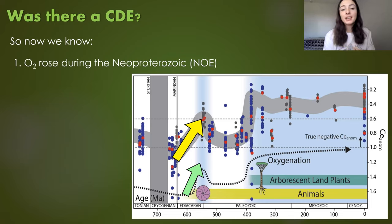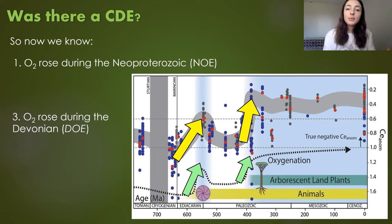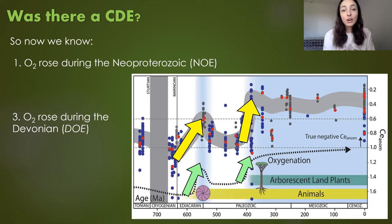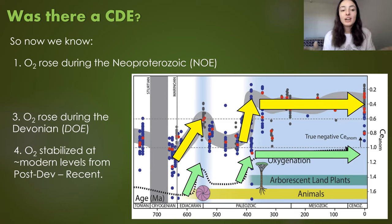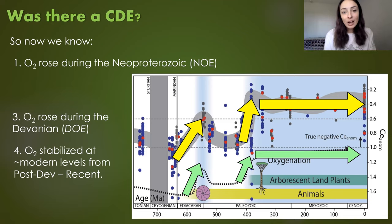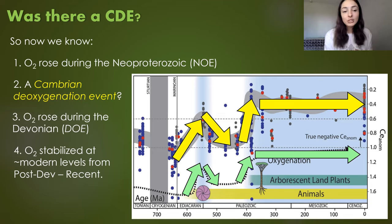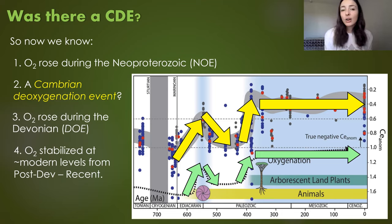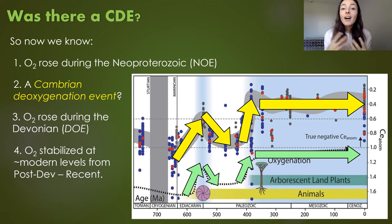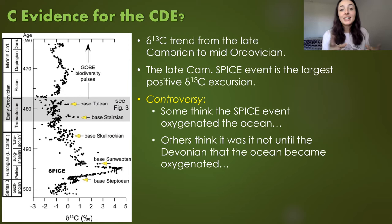So what do we know now? Oxygen rose during the NOE in the atmosphere but not so much in the ocean, then rose again in the Devonian with vascular plant evolution, oxygenating the ocean and stabilizing oxygen at near-modern levels from post-Devonian onward. But what happened in between? The Cambrian marked a period of decreased oxygen or deoxygenation, likely in part due to animal evolution. What geochemical evidence do we have in the rock record pointing to this deoxygenation event?